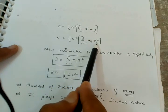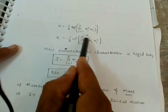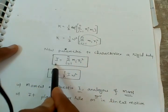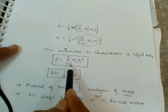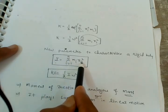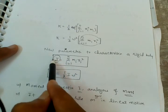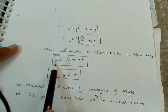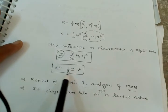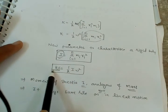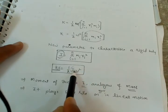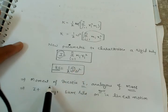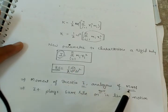We define a new parameter: capital I equals the sum from i equals 1 to n of m_i r_i squared. This I is nothing but the moment of inertia. Substituting, the total kinetic energy of the body equals half I omega squared, where omega is the angular velocity and I is the moment of inertia.